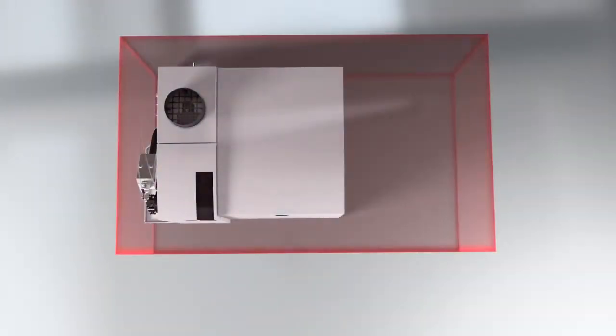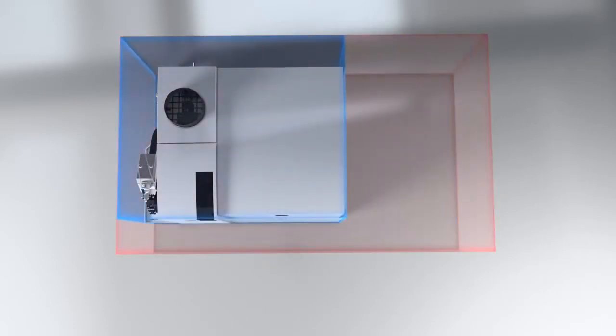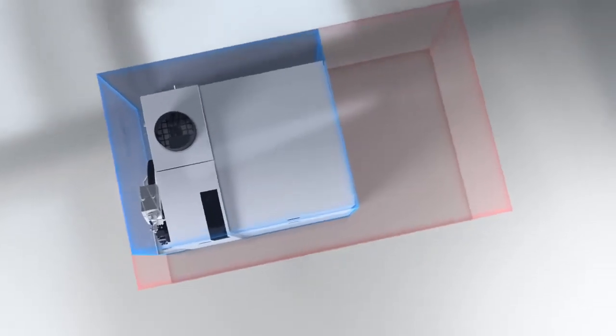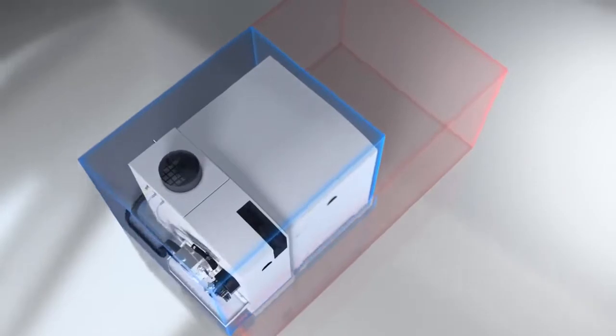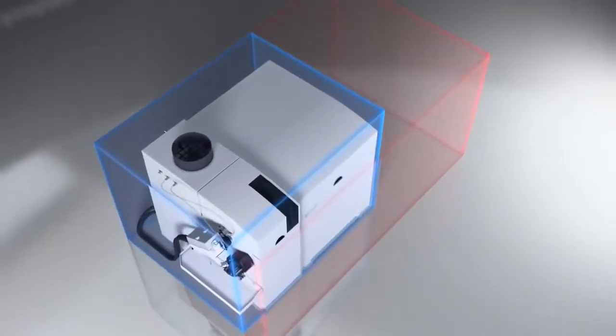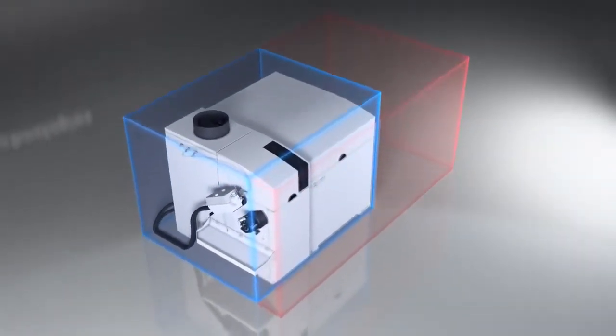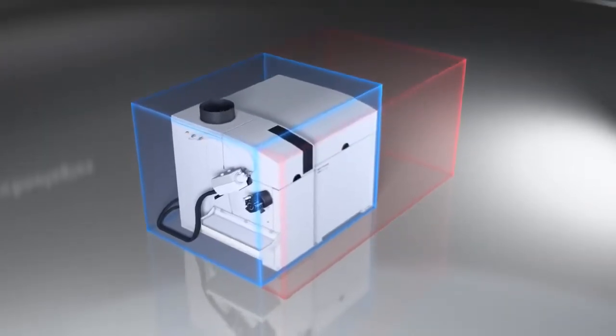The 7700 is a compact benchtop instrument, around 30% smaller than its nearest rival, and less than half the weight of some comparable systems. A compact design reduces demands on expensive laboratory space, making the 7700 especially cost-effective in clean room installations.